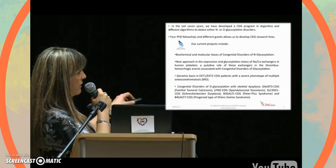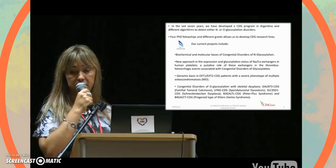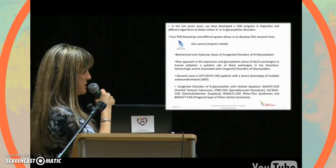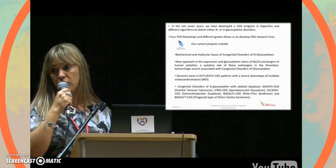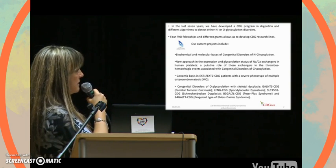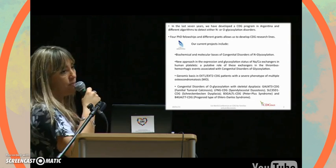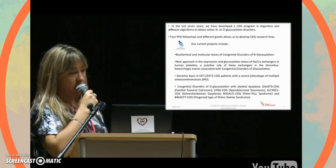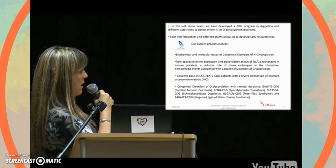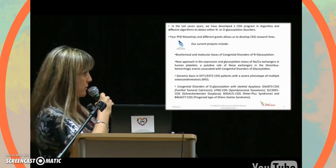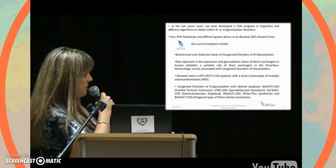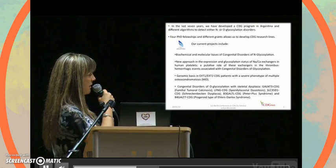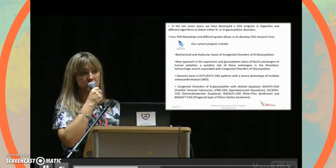Another research line concerns specific CDG subtypes — X1 and X2 CDG — in patients presenting a clinical phenotype of multiple osteochondromatosis. Recently, we started a new project on O-glycosylation disorders presenting with skeletal dysplasia, including familial tumoral calcinosis, spondylo-costal dysostosis, Schneckenbecken dysplasia, Pierreplast syndrome, and the progeroid type of Ehlers-Danlos syndrome.